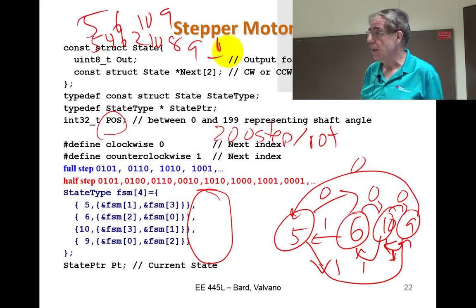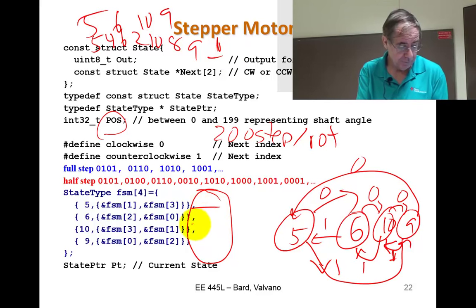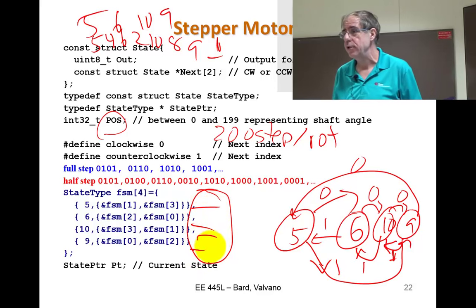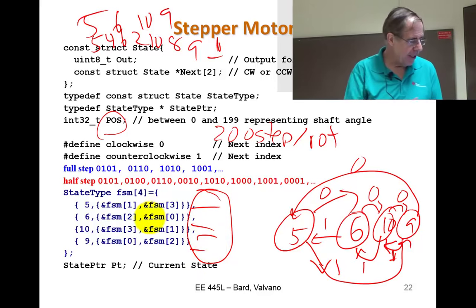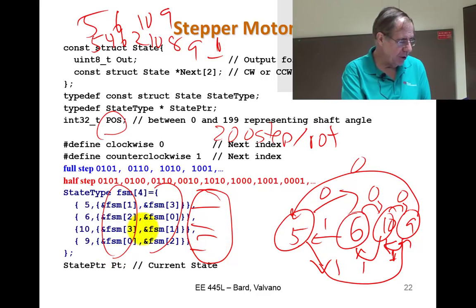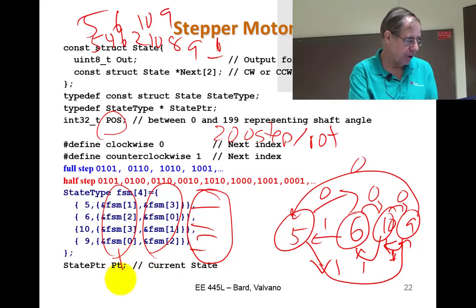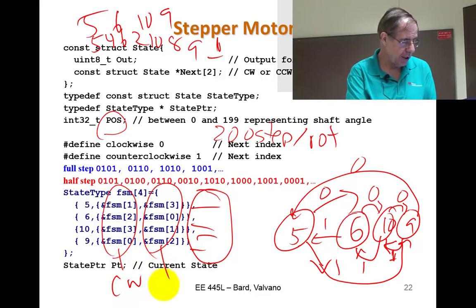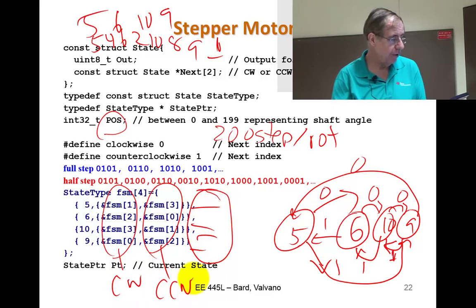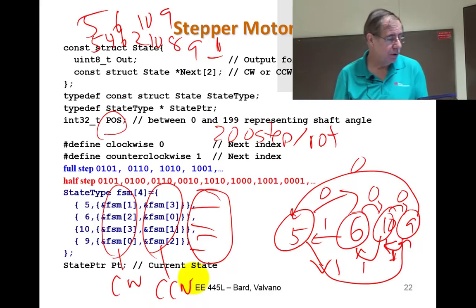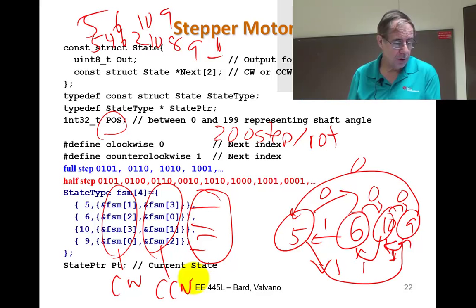To implement half-stepping you just inject a state between each existing state — going from four states to eight states — and use the input to decide whether to go clockwise or counterclockwise.